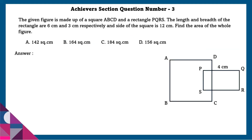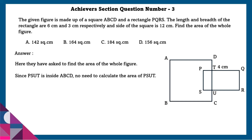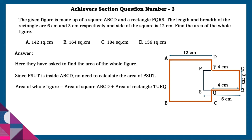Achieve section question number 3: The given figure is made up of a square ABCD and rectangle PQRS. The length and breadth of the rectangle are 6 centimeters and 3 centimeters respectively, and sides of the square is 12 centimeters. Find the area of the whole figure. Since PSUT is inside ABCD, no need to calculate the area of PSUT. Area of the whole figure is equal to area of square ABCD plus area of rectangle TURQ, which is equal to 156 square centimeters.